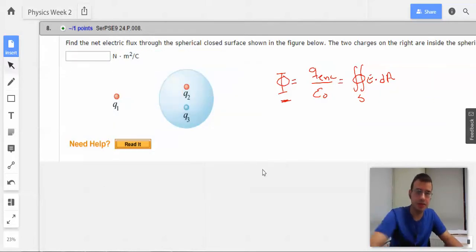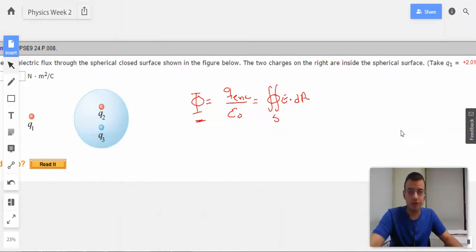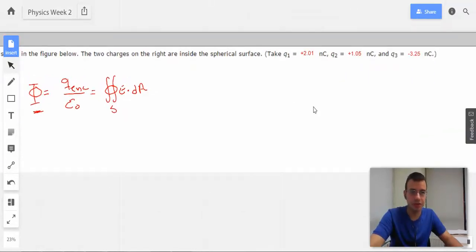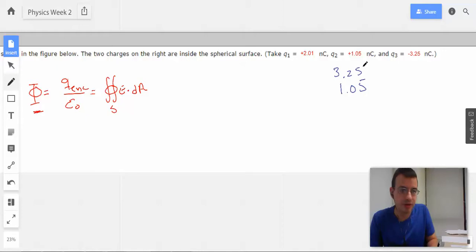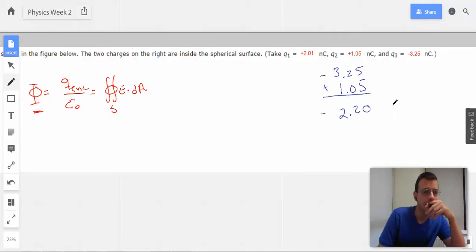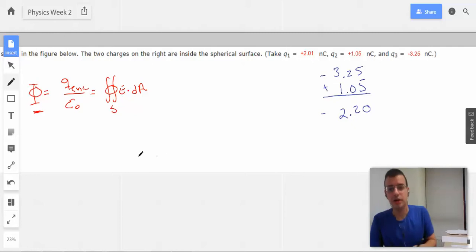So first we need to find out what Q enclosed is. Q enclosed is Q2 plus Q3. So we have 1.05, and then we have minus 3.25. So even though it's negative up there, I'm going to subtract the smaller number from the bigger number and then take the opposite. One of those tricks you learn in grade school. So it's going to be negative 2.2. Is that true? Yes. I'm going to say that's true. Totally true.